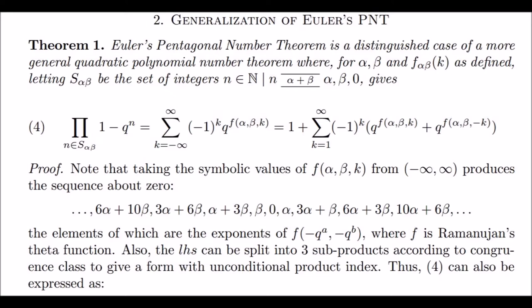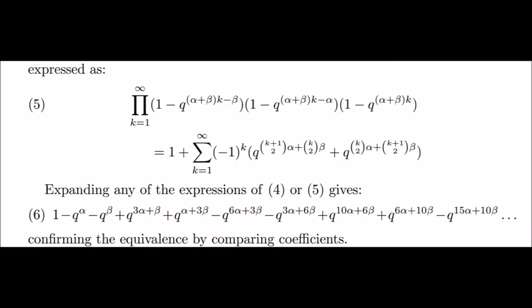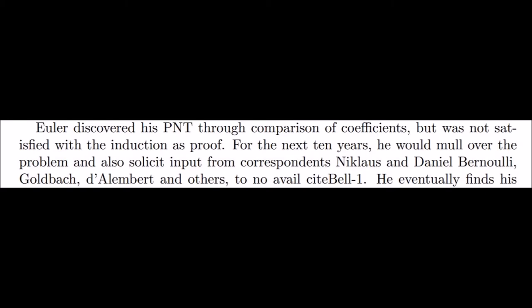Quadratic polynomial number theorem. Proof via Ramanujan's tau function, essentially. Euler wasn't happy with just that, and neither should we be.